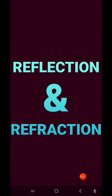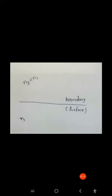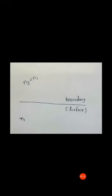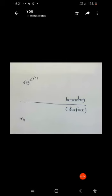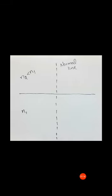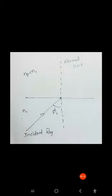Now we'll see what is reflection and what is refraction. I am taking two materials: one having a refractive index of N1 and another having refractive index N2, where N2 is less than N1. The middle line is called the boundary or surface. I am taking the normal line perpendicular to the boundary, and then applying an incident light ray.